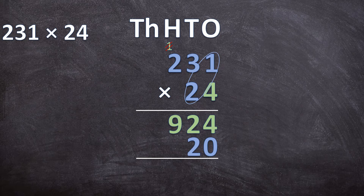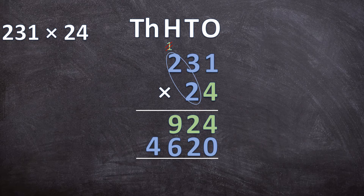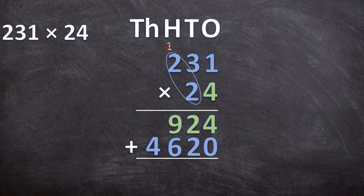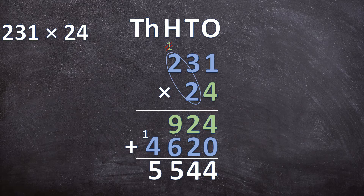Now that we've written down the zero, we simply multiply the digits: 2 times 1 is 2, 3 times 2 is 6, and 2 times 2 is 4. So 20 times 231 is 4620. Now we add the two answers together. Starting at the ones: 4 plus 0 is 4, 2 plus 2 is 4, 9 plus 6 is 15 so write 5 and carry the 1, and 4 plus that 1 is 5. So 231 times 24 is 5544.